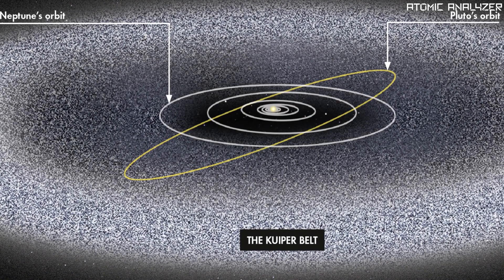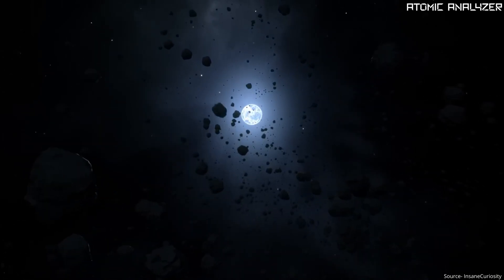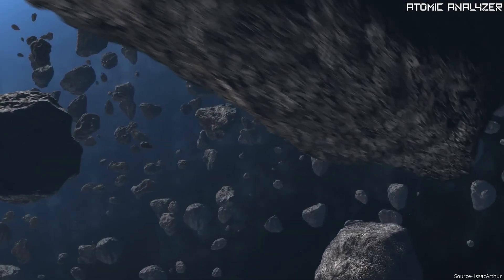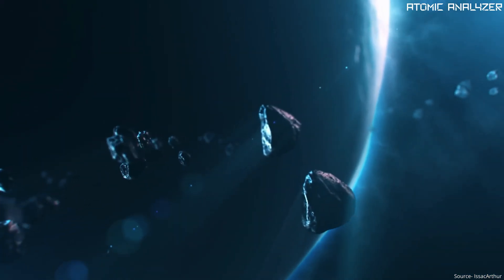Now what's the Kuiper Belt? It's like the cosmic playground for icy objects, a bit like asteroids but made of different stuff, mainly ices and rock.